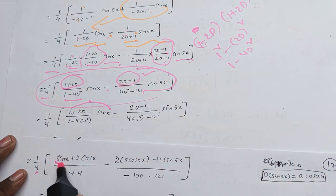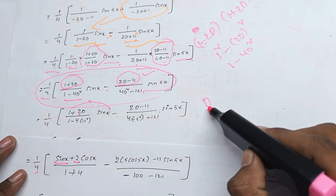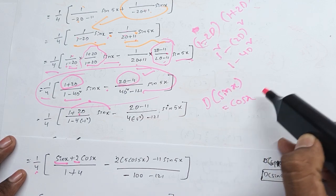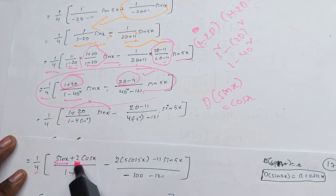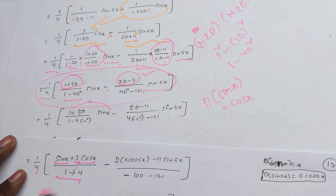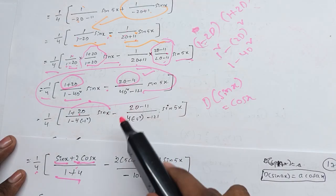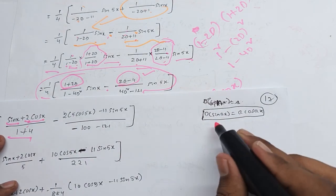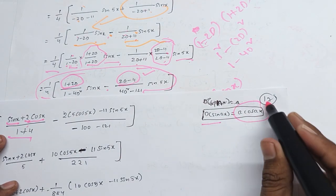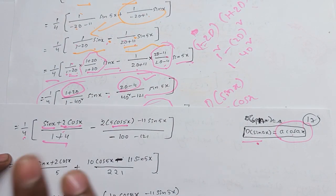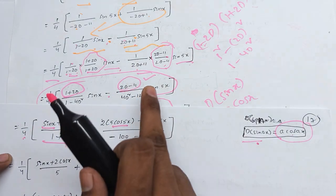Now 1 into sin x requires the derivative: 2D applied to sin x gives 2 cos x. So 2 into d of sin x equals 2 cos x. Then by 1 minus 4 into 1, and minus 2 into the derivative of sin x. The derivative formula: d(sin ax) equals a cos ax. So for sin 5x: 5 cos 5x, minus 11 into sin 5x.